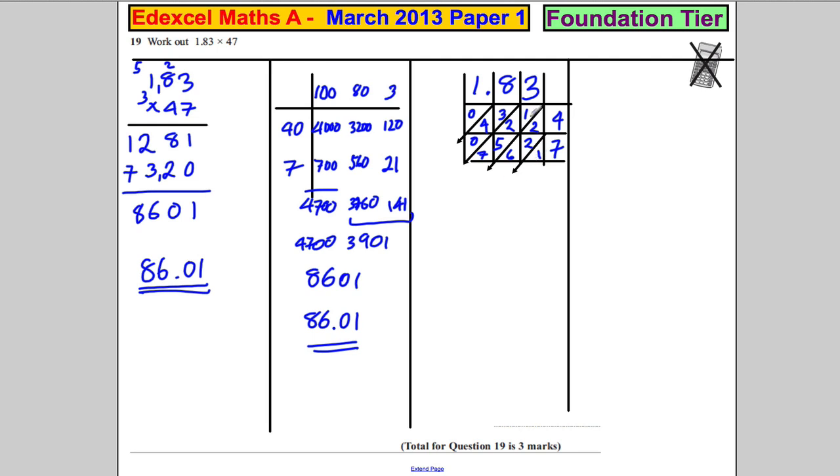And then from the bottom line, we're going to add along the diagonal. So this one here just adds to 1. 2 add 2 is 4, add 6 is equal to 10. So put down the 0 and carry the 1 up here. 1 and 1 is 2, add 2 is 4, add 5 is 9. And 9 add 7 is equal to 16. So put down the 6 and carry the 1 up here. 1 and 3 is 4, add 4 is 8, add 0 is simply 8 and you've got 0 here.